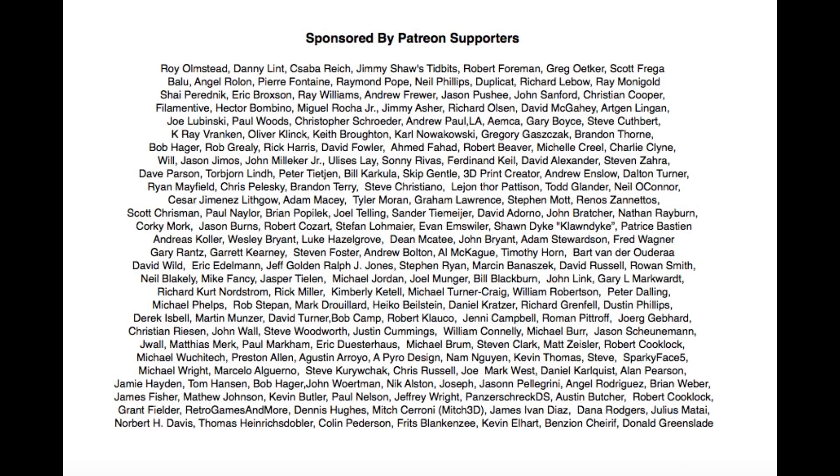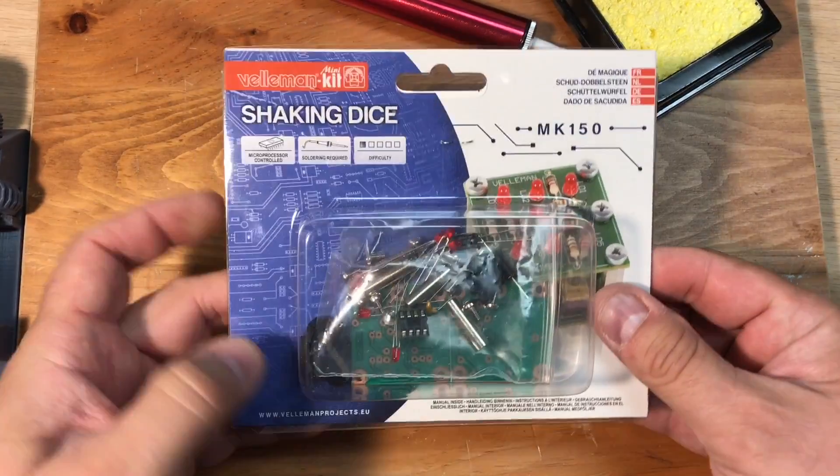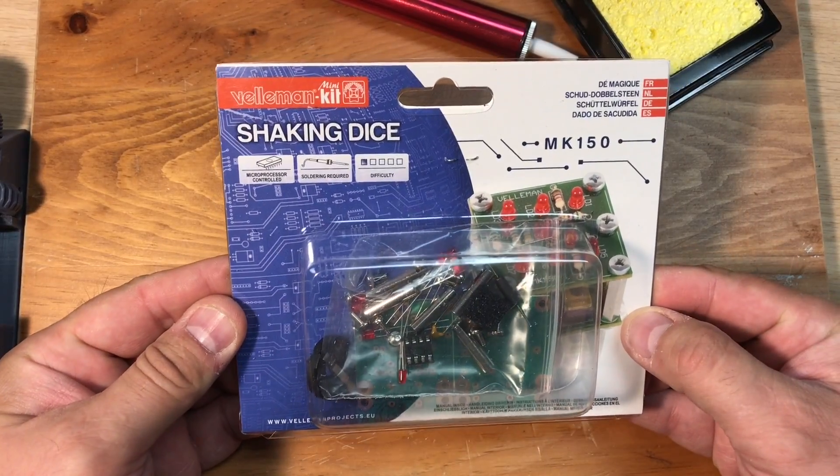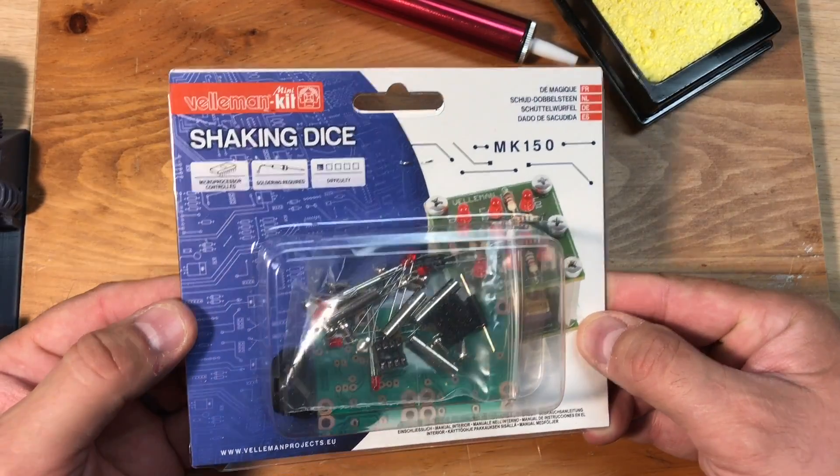Filament Friday is brought to you every week by the generous donations of my Patreon supporters. For this project I started with this shaking dice kit. It's kit MK150 from the company Veloman. They sent me this to do a review.